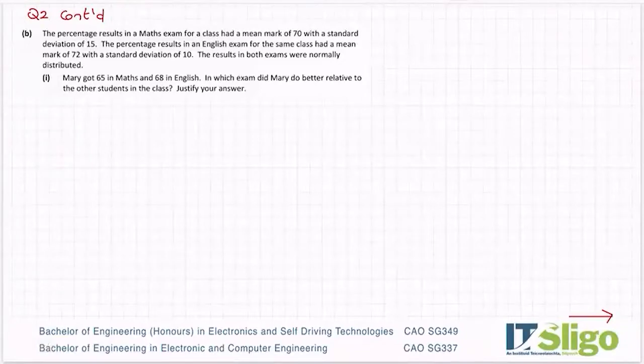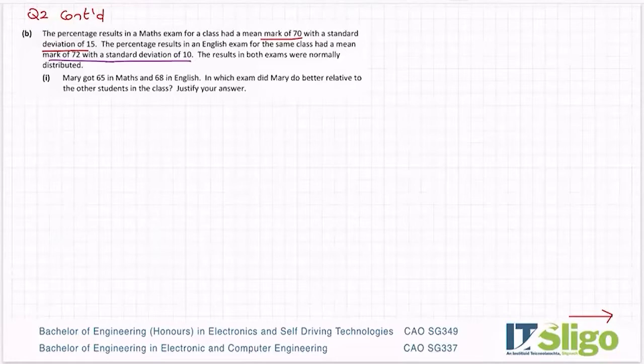Part B, the percentage results in a maths exam for a class had a mean mark of 70 with a standard deviation of 15. The percentage results in an English exam for the same class had a mean mark of 72 and a standard deviation of 10. The results in both exams were normally distributed. Mary got 65 in maths and 68 in English. On which exam did Mary do better relative to the other students in the class?